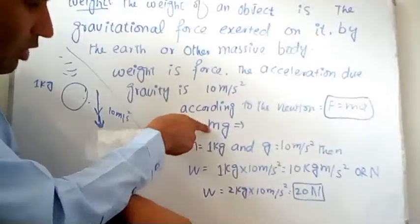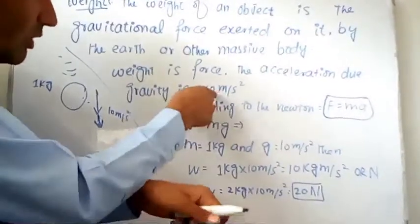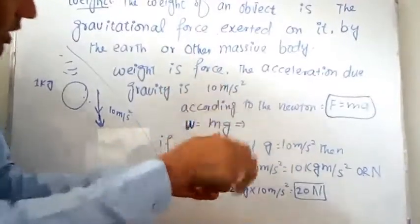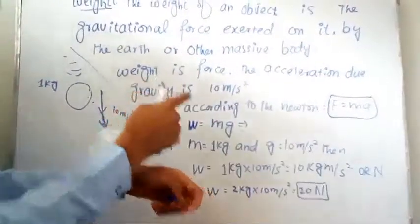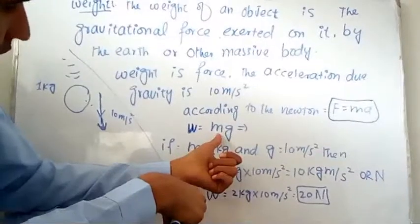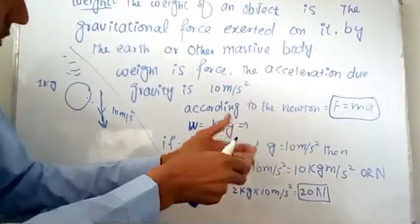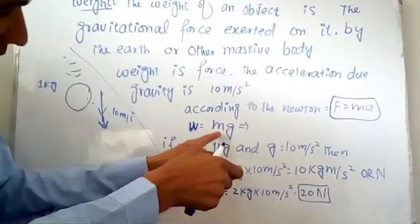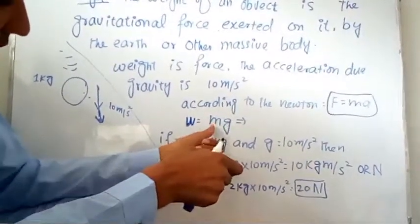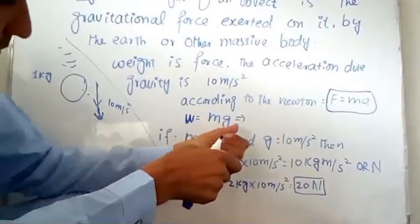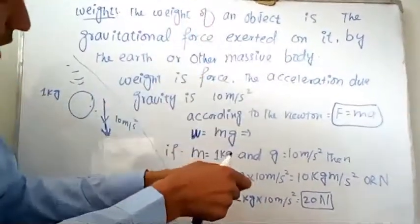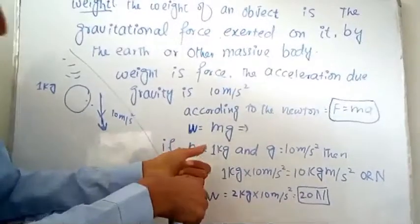Here m is the mass of the object and g is the gravitational acceleration — the acceleration due to gravity. We will put the values of mass and g into this equation to find the weight. When we substitute these values, we can easily calculate the weight of the object, and this weight will be the gravitational force of that object.